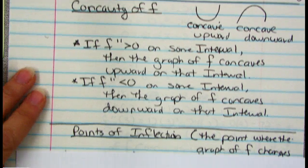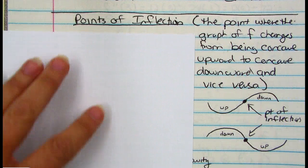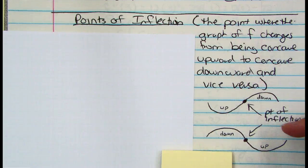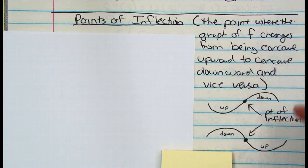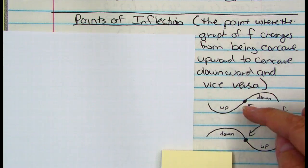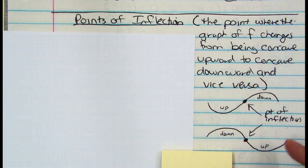Now let's talk about points of inflection. A point of inflection is the point where the graph of f — the original function — changes from being concave upward to concave downward, and vice versa. Vice versa means you just switch those two: concave downward to concave upward. At the point it switches over from up to down, that is a point of inflection. Or from downward to upward concavity — at the point it changes, that is called a point of inflection.